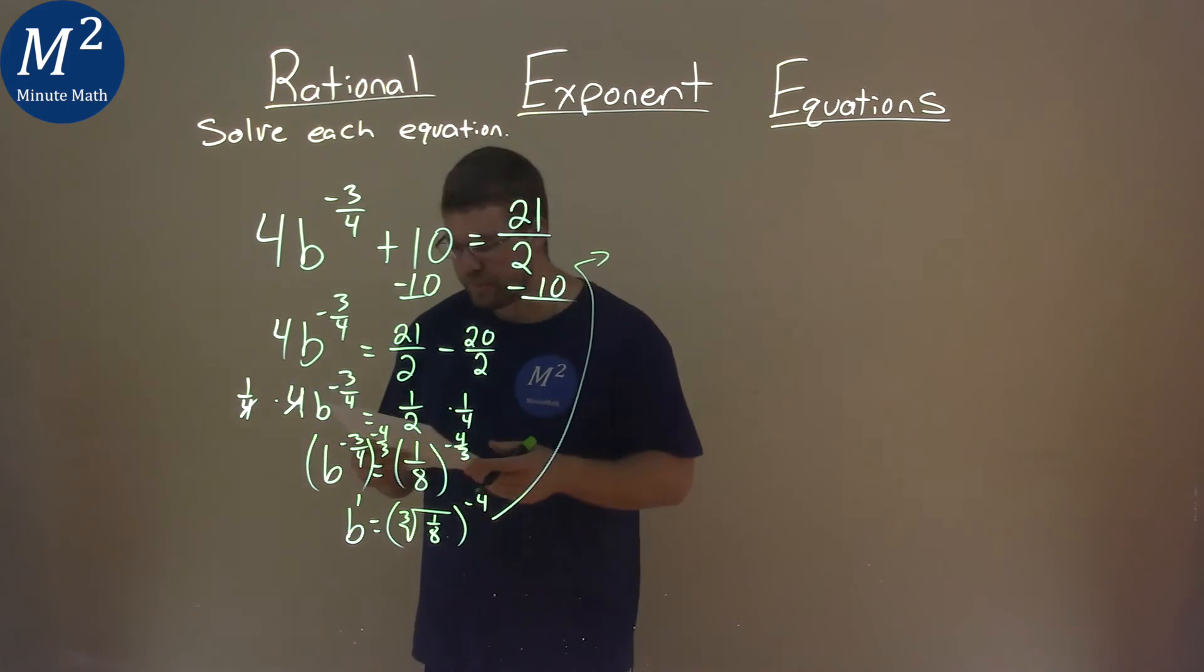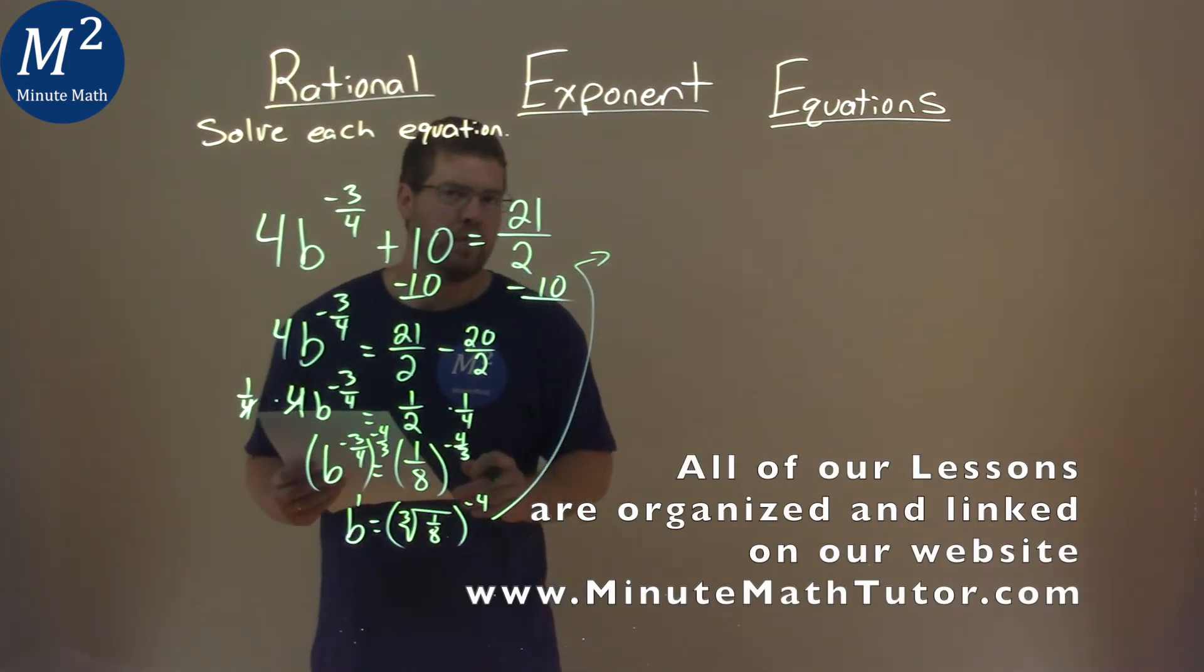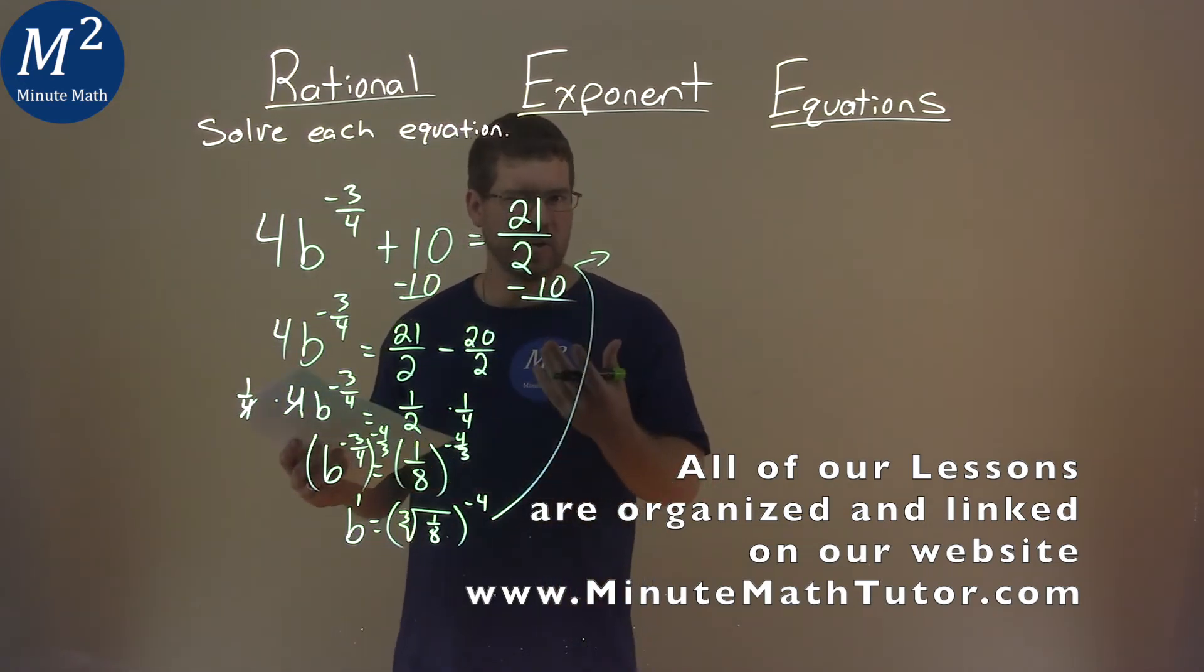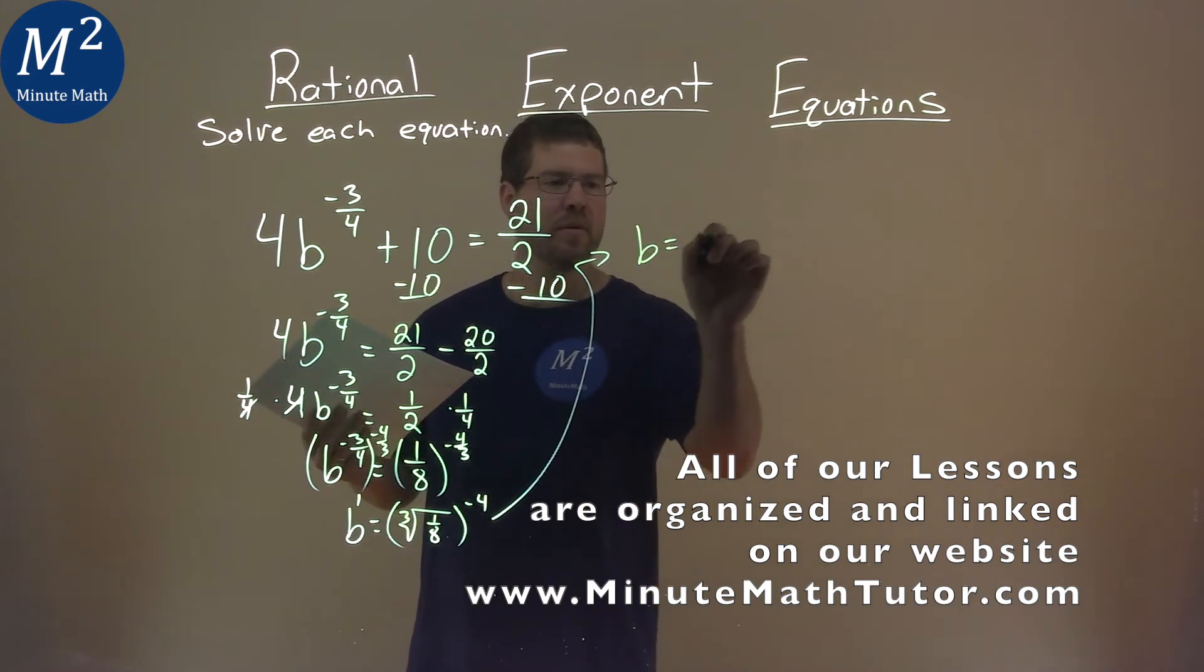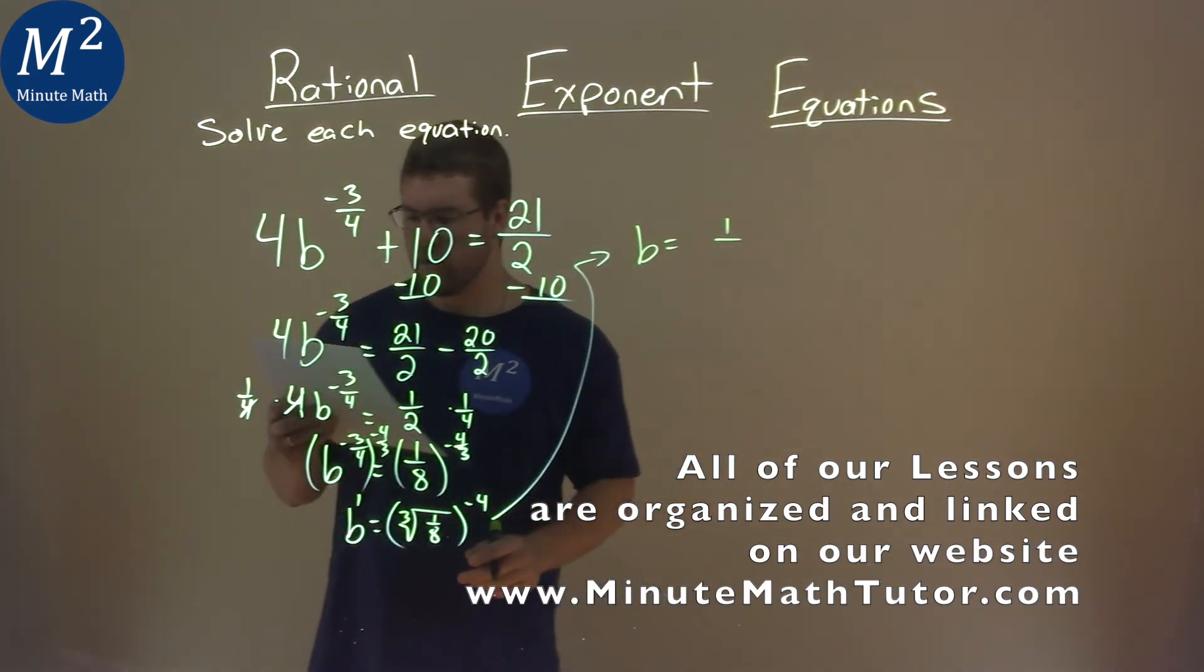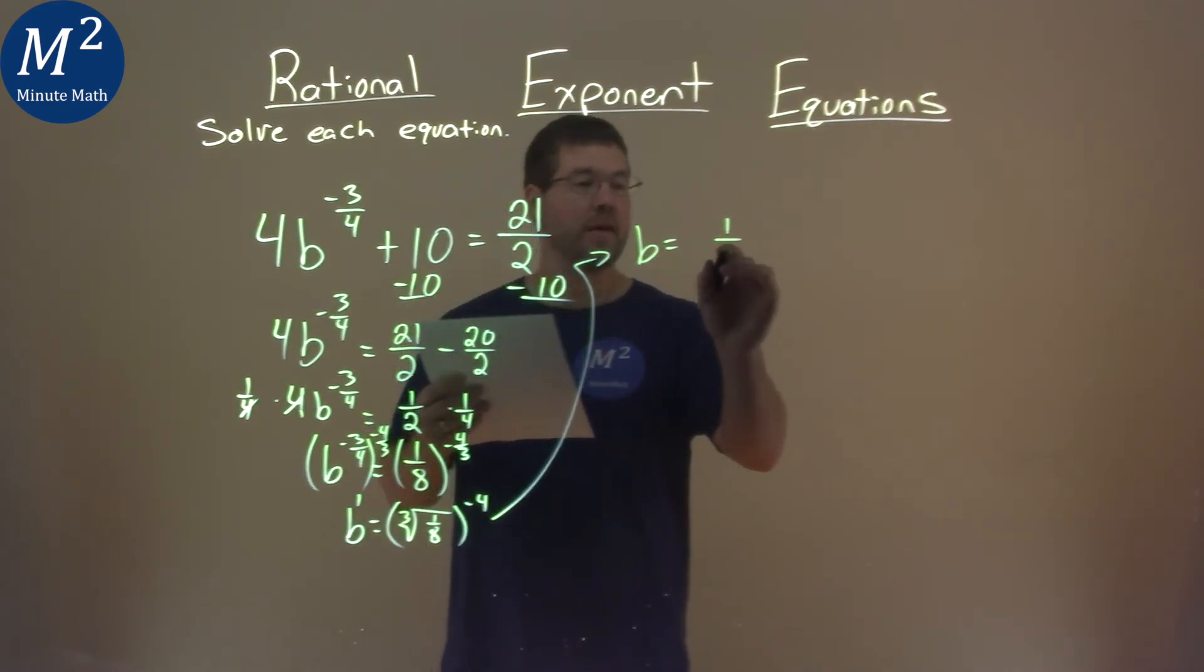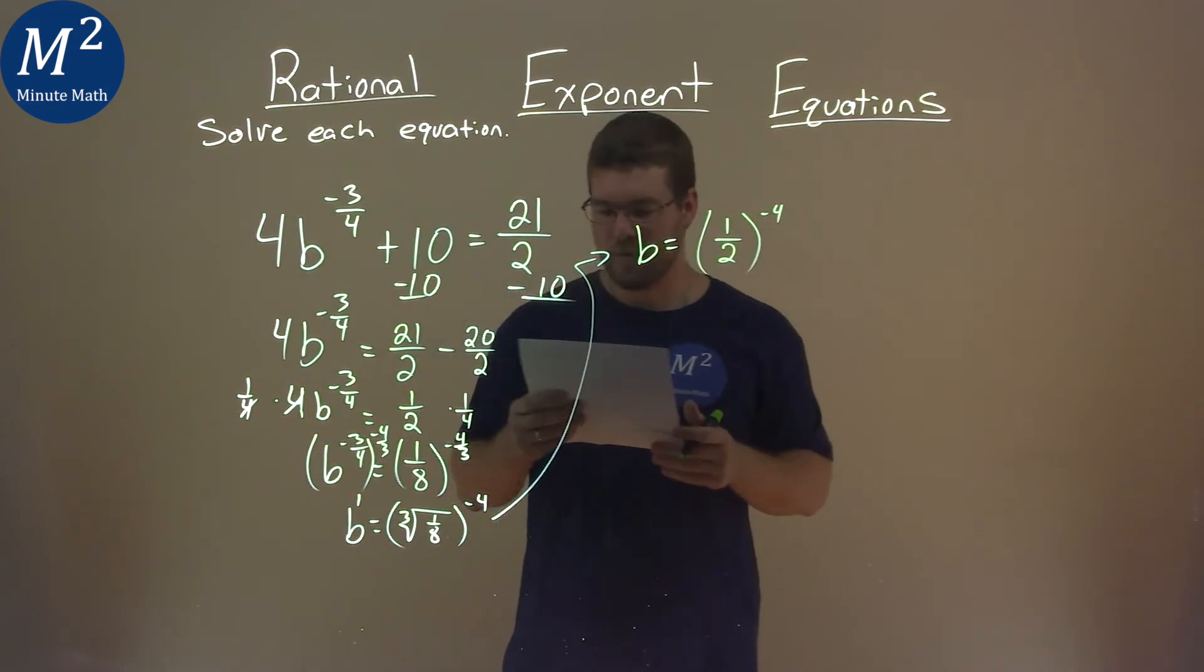Well, the third root of 1 eighth, we take the root, or the third root of the numerator and the denominator, and we can do that individually. Third root of 1 is 1. So we have b now equals 1 over third root of 8, which is 2. But that's all going to be raised to the negative 4th power here.